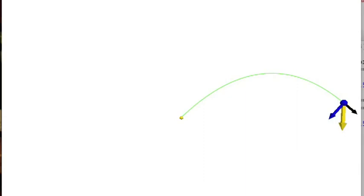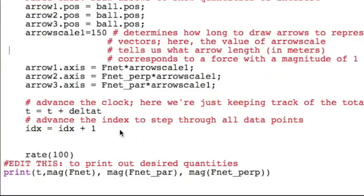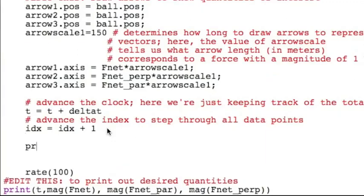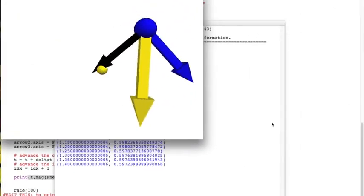The blue arrow, at every instant in time, points to the center of the kissing circle that, at that instant, fits the trajectory smoothly. The visualization shows us qualitatively what f net, f net parallel, and f net perpendicular are doing. We can obtain the quantitative values by inserting an appropriate print statement inside the loop and looking at the values in the output window.